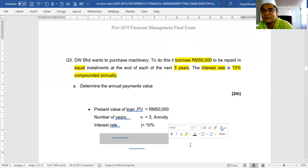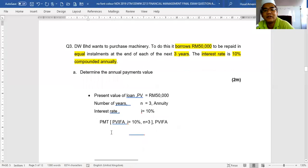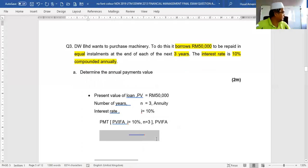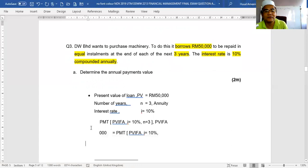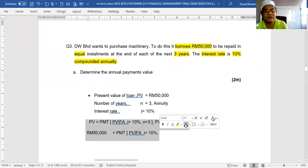And then what table do you use in this question? Correct. PVIFA or table A-4. So you refer to the table. The table is provided in the final exam. PVIFA table A-4.